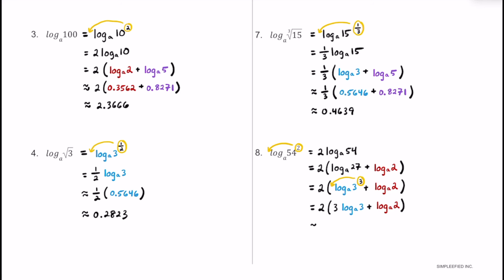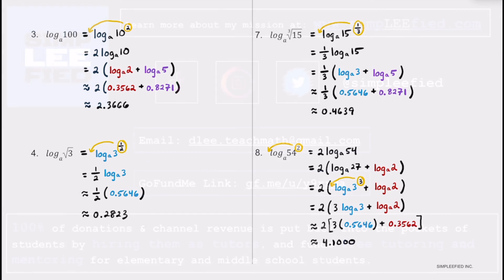Substituting in the decimal approximations, we get about 4.1000. So there you have 8 different practice problems where we used different properties of logarithms to approximate the values of each of these expressions. If you found the video helpful, please consider giving it a thumbs up and sharing with a classmate or friend. Keep up the great work, and I'll see you in the next one.